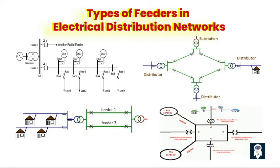There are different types of feeders in the electrical distribution world, each with its own specific role. Some feeders are like the main highways, carrying a large volume of electricity to densely populated areas; others serve remote locations with lower power demands. First, the radial feeder is the simplest and most common type, operating in a radial configuration where power flows from the source to the load points in a single direction. However, a fault in a radial feeder can cause an entire section to lose power.